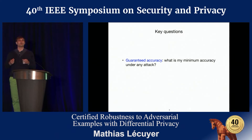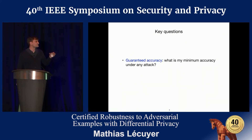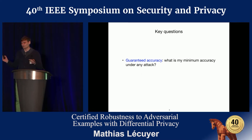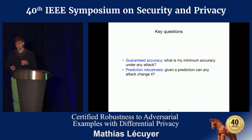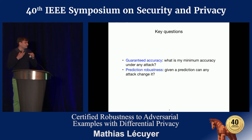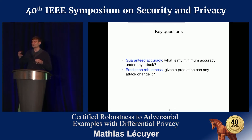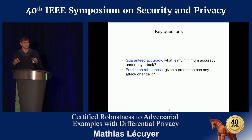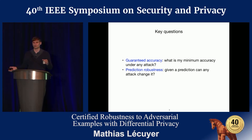The key questions we want to answer are: first, can we guarantee any accuracy — can we say for any attack below a given size, this is the accuracy you can rely on? Second, and maybe even more important, for a given prediction can we say how hard it is to attack? In the access control example, if the prediction is robust and hard to attack, you can let the person in automatically; if it's not robust, a guard can check the actual concert ticket.